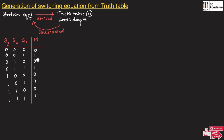If we observe this truth table, we have 4 cases where the output is 1 and for the remaining combinations of input, the output is 0. For each such condition, wherever 0 is present we take the complement of the variable, and wherever 1 is present we write the variable as it is. For the case 0, 0, 1 the output is 1.